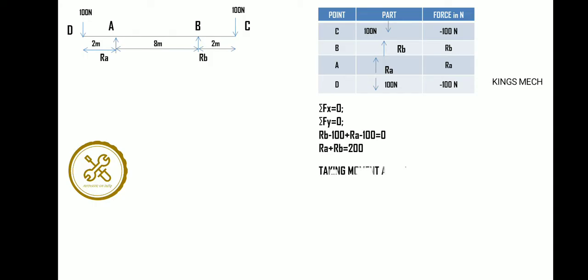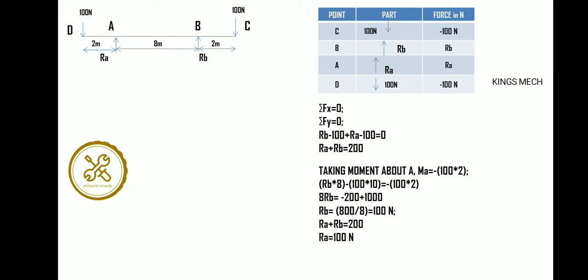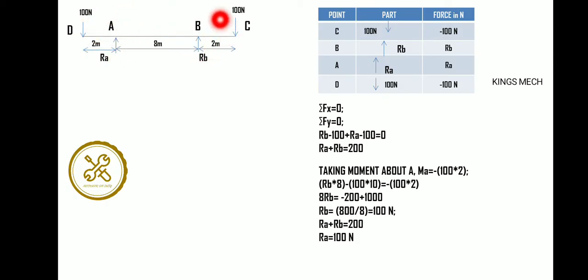After that, we take the moment about A. Moment about A equals zero. We are taking moments about A, not about B. From this, we can solve for RB, and then RA follows from the equilibrium equation.